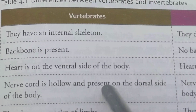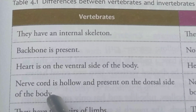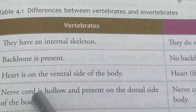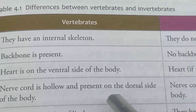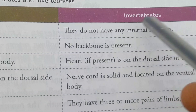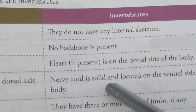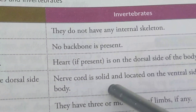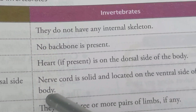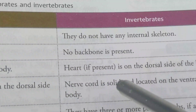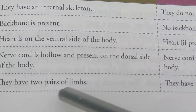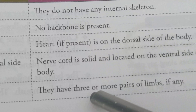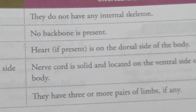In vertebrates, the nerve cord is hollow and present on the dorsal side of the body. In invertebrates, the nerve cord is solid and located on the ventral side of the body. Vertebrates have two pairs of limbs, whereas invertebrates have three or more pairs of limbs, if any.